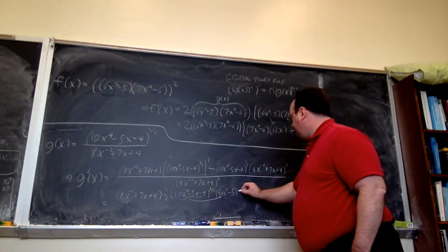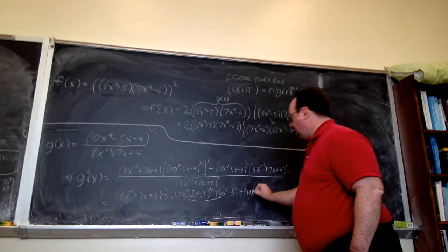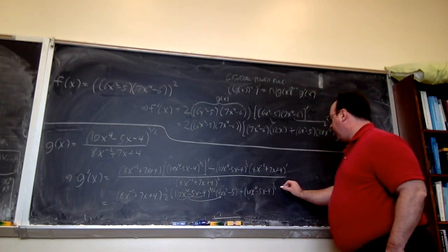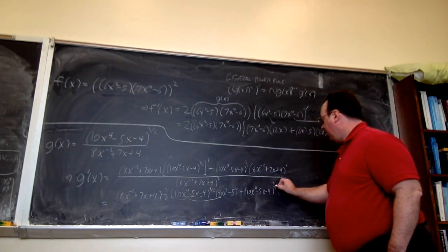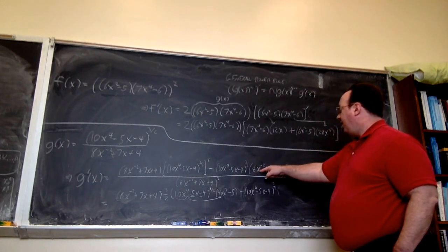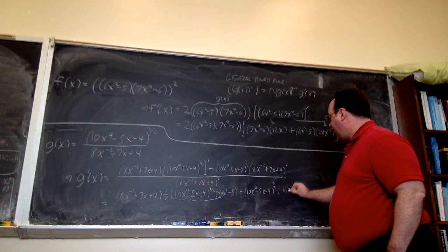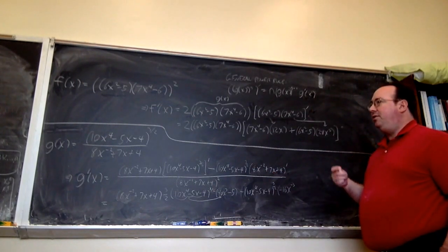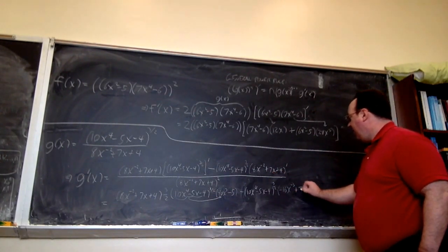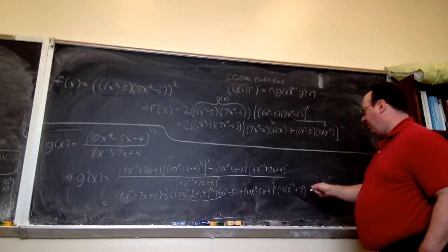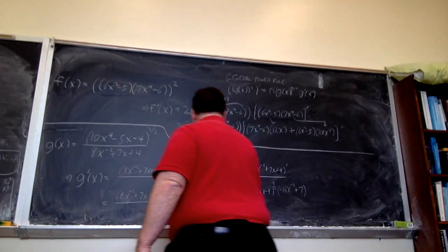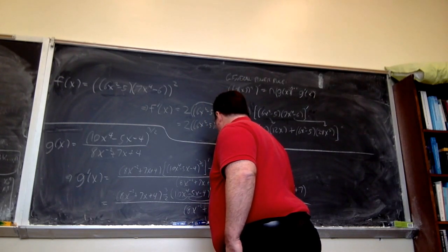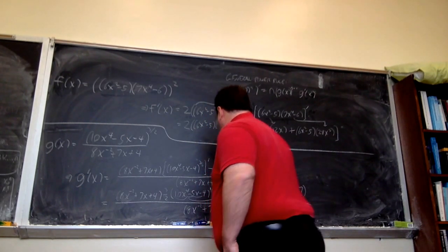Continuing to the next term: repeat (10x⁴ − 5x)^(−4) to the 3/2, and now take the derivative of the denominator. Using the power rule on each term: derivative of 8x^(−2) is −16x^(−3), plus the derivative of 7x is 7, and the +4 contributes nothing. Then we just have to remember to divide by the denominator of the original function, squared. And we're done.